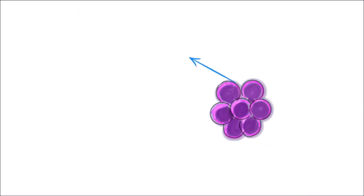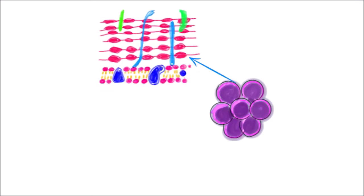Staphylococcus aureus has a thick peptidoglycan layer in its cell wall which helps to protect the cell from osmotic pressure. Protein A is present in the peptidoglycan layer and is bound to the cell membrane, which inhibits opsonization and attaches itself to the antibody IgG.